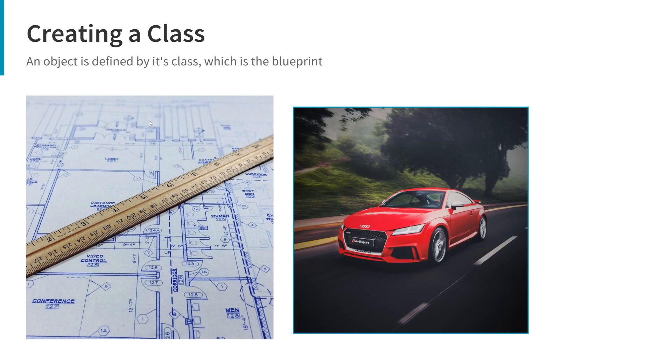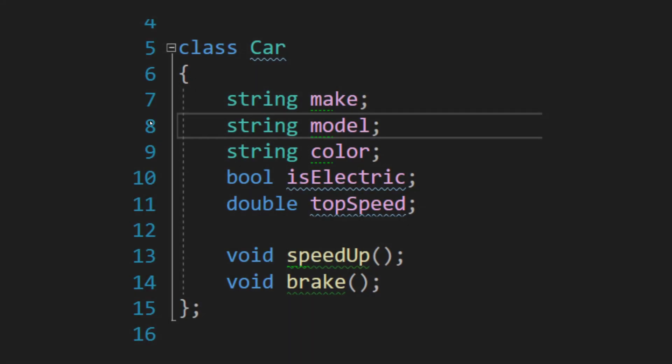First you make a class to design what data and functions the object will consist of, and then you create objects — which is known as instantiating the class. Now let's look at an example. On the screen is a simple class definition that defines a car, which we'll use to create car objects. The car consists of crucial data: the make, the model, the color, whether the car is electric, and its top speed.